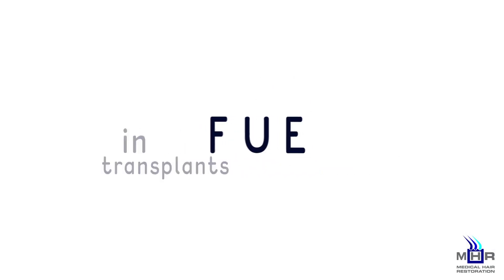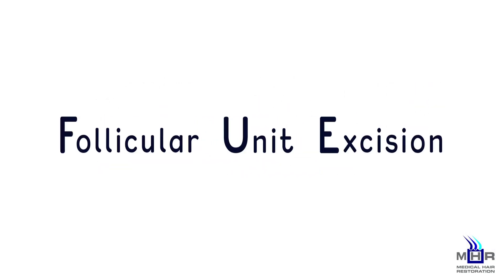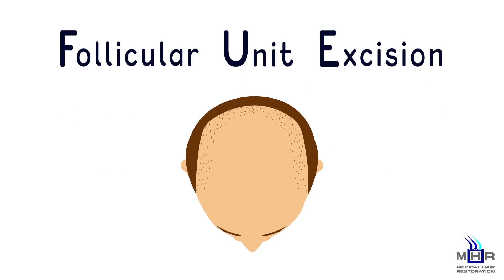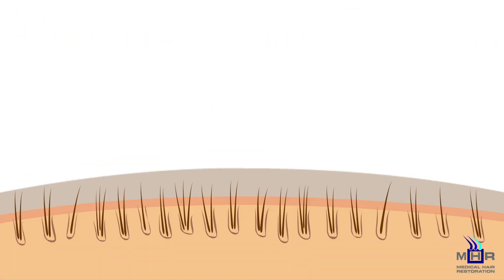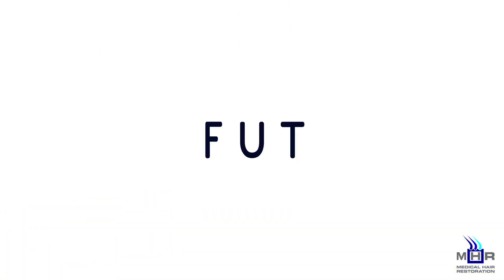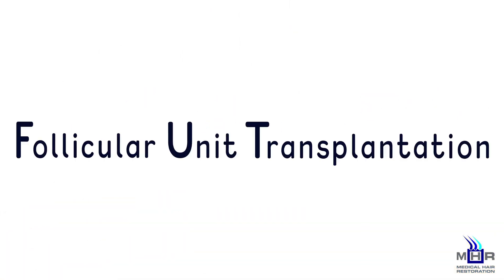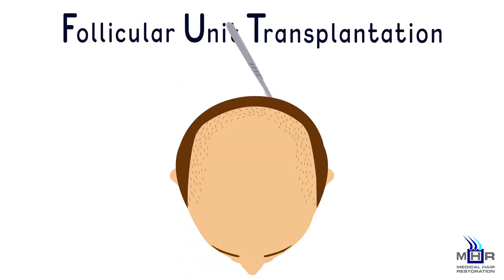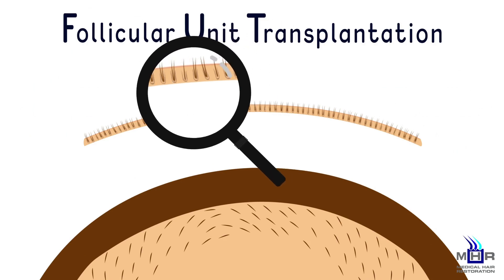In FUE transplants, or follicular unit excision, hair follicles are taken from the back of the scalp within the donor region one by one. In FUT transplants, or follicular unit transplantation, a strip of hair-bearing skin is removed from the donor region containing thousands of hair grafts.